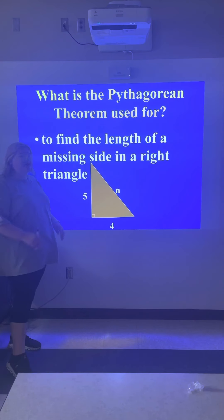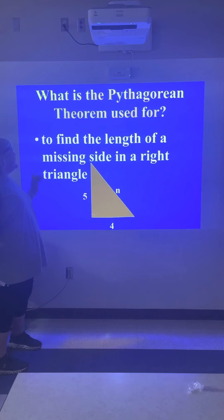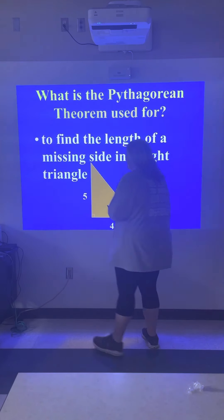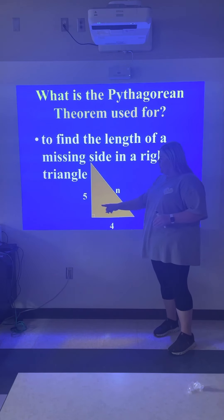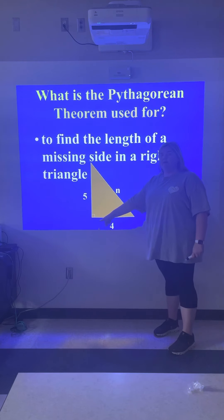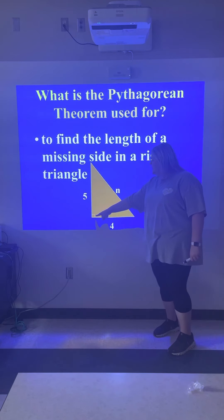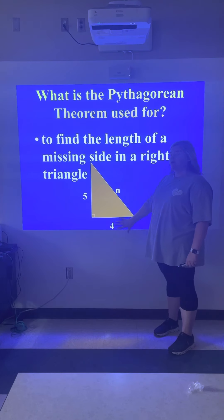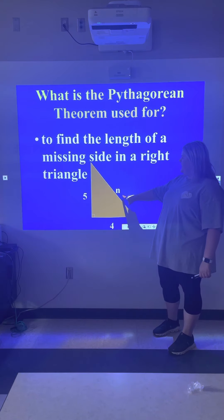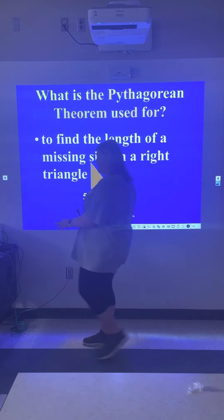So to start, what is the Pythagorean Theorem used for? The Pythagorean Theorem is used to find the length of a missing side of a right triangle. For example, we have this right triangle right here — we know it's a right triangle because it has a 90-degree angle. We see two values on two sides, and we're trying to find the value of the missing side.